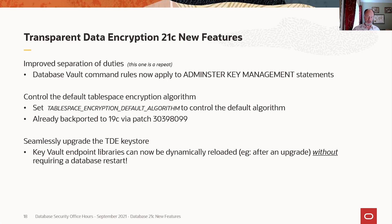The other change is probably applicable to a lot more of you. If you're using Key Vault to manage your keys for Transparent Data Encryption — and remember, Key Vault is something you should be using in most cases — starting with 21c, when you upgrade a Key Vault endpoint library, you no longer have to bounce the database. Instead, we dynamically reload the updated library. This makes it a lot less painful to do your quarterly patching for Key Vault because you don't have to coordinate the patch cycle with downtime for your databases.